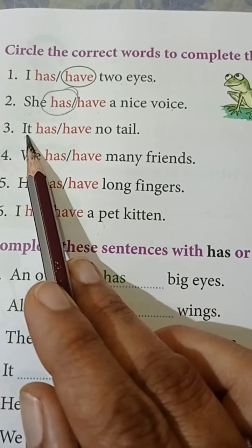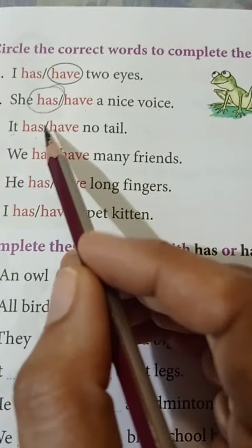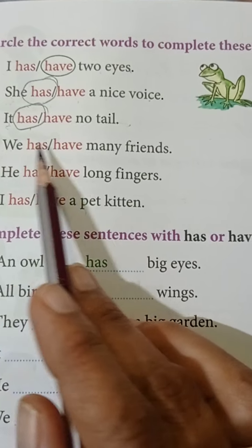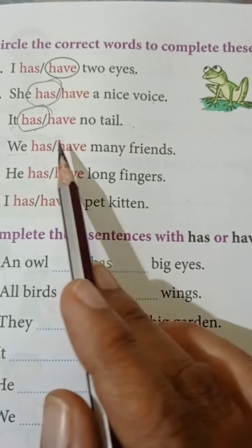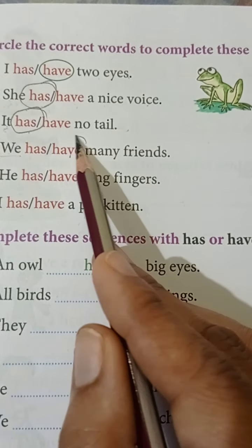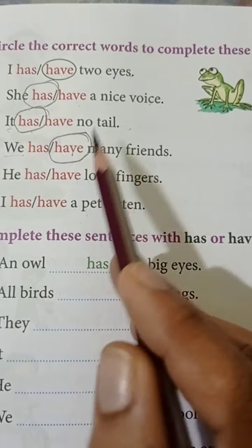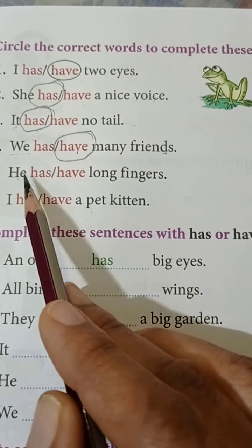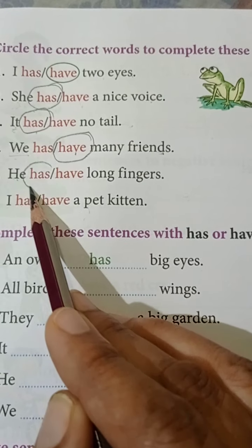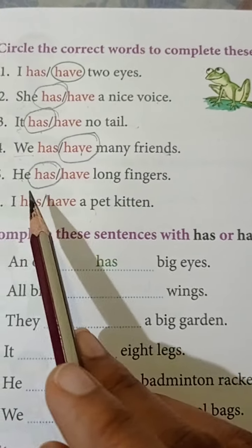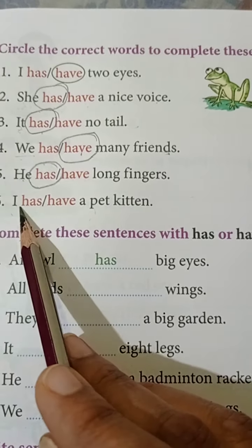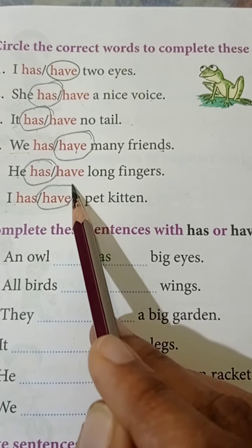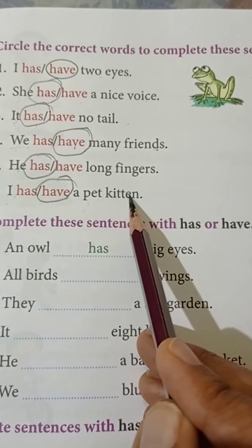He — singular — uses 'has'. I — first person — uses 'have'. 'I have a pet kitten.' All birds — many, plural — use 'have'. They — many, plural — use 'have'. It — singular again — uses 'has'. He — singular — 'has'. We — many, plural — 'have'.